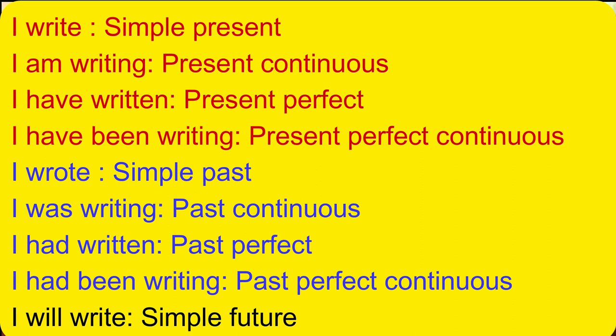Now let's take a base form of the verb and change it into different tenses. Repeat after me — it will be good practice. I write — simple present. I am writing — present continuous. I have written — present perfect tense. I have been writing — present perfect continuous tense. I wrote — simple past. I was writing — past continuous tense. I had written — past perfect. I have been writing — past perfect continuous. I will write — this is simple future tense.